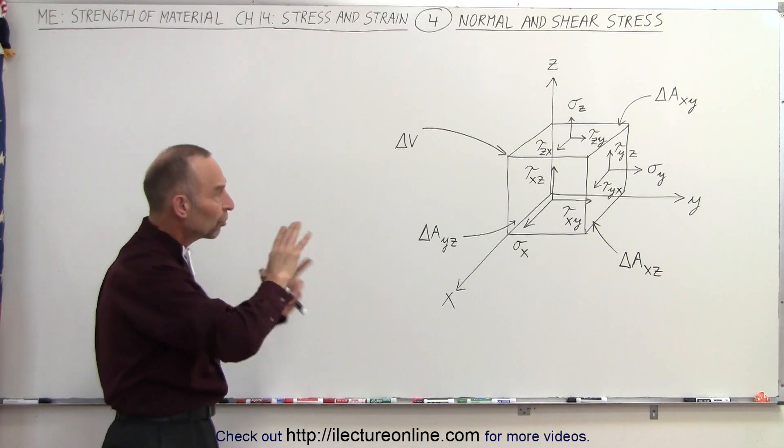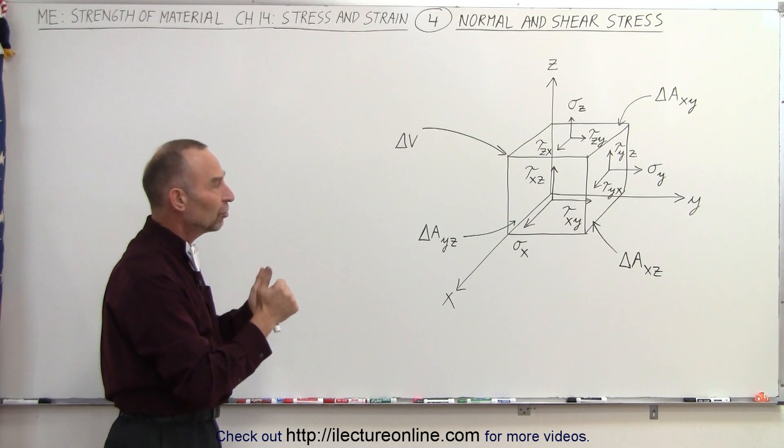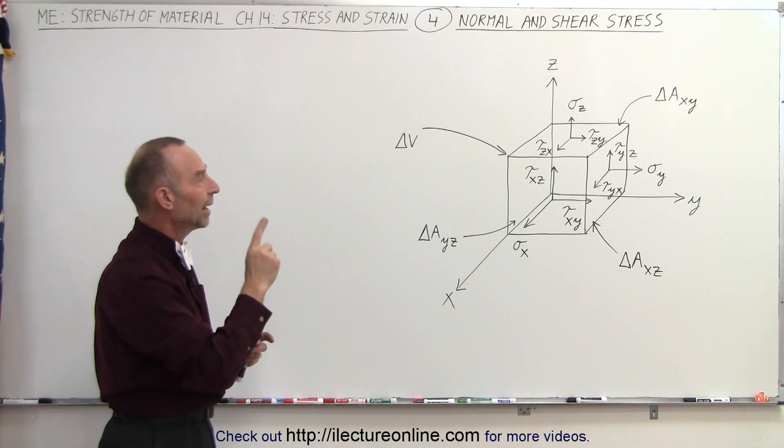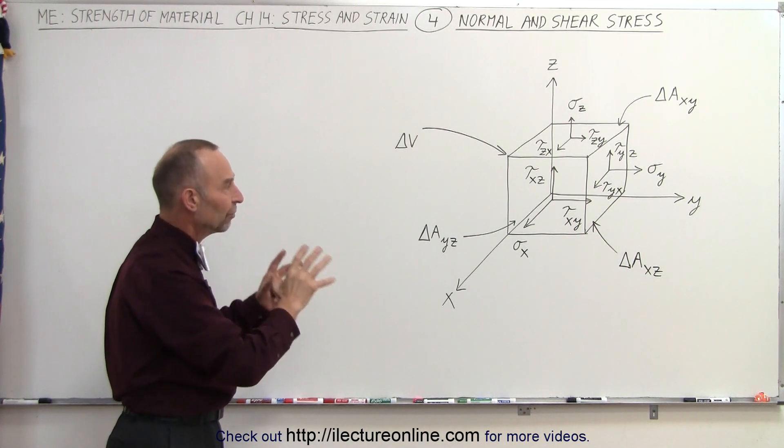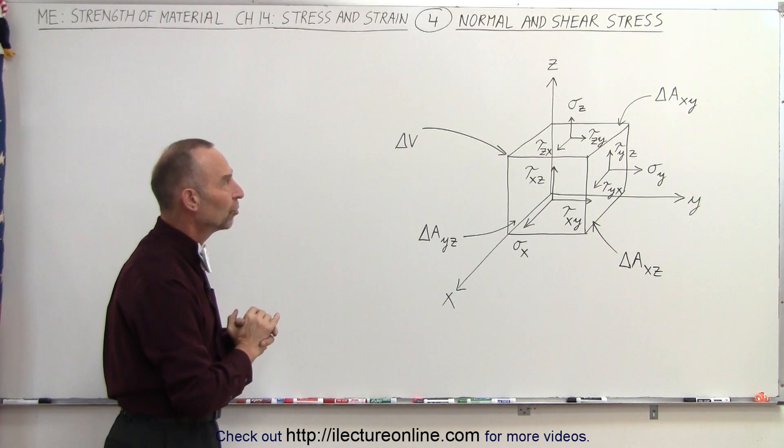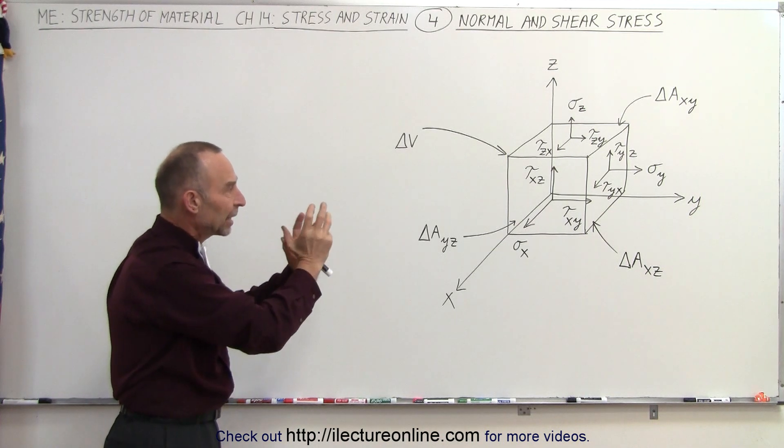So notice that we have nine stress components for the three surfaces. On each surface, we have one perpendicular and two shear stresses, and together forming nine different components of the stress in a particular volume.